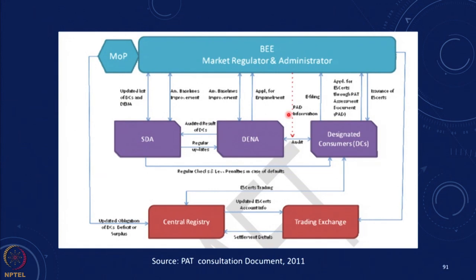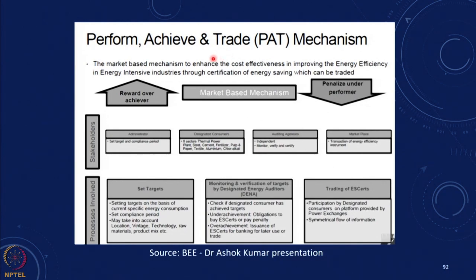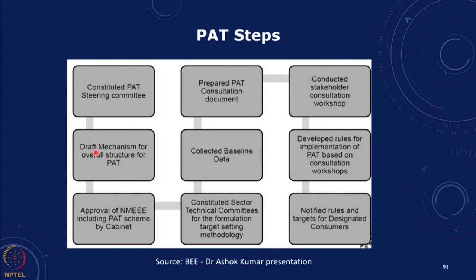The idea was that there would be designated consumers, a nodal agency which would audit and monitor consumption, an exchange and registry, with the Bureau of Energy Efficiency as the market regulator. Everyone would have over a three-year cycle a target: if you achieve your target that is fine; if you overachieve you get a certificate which you can trade and sell; if you underachieve you either buy the certificate or pay a penalty. The steps were that steering committees were created, approved by the cabinet, sectoral committees were appointed, baseline data collected, and rules notified for designated consumers.